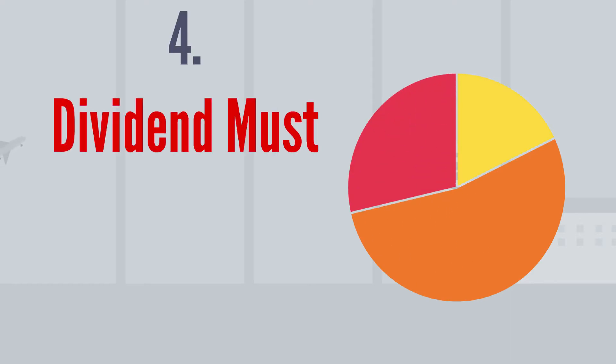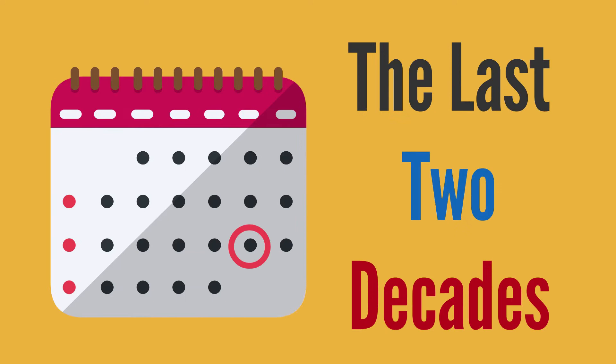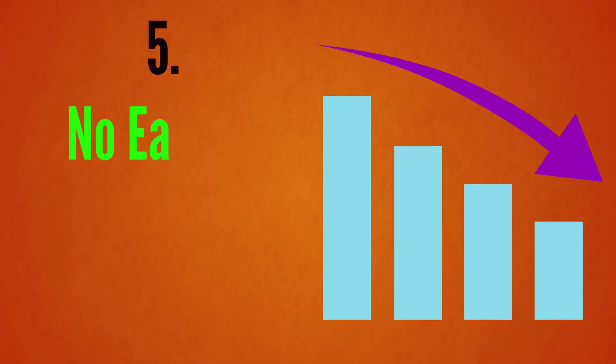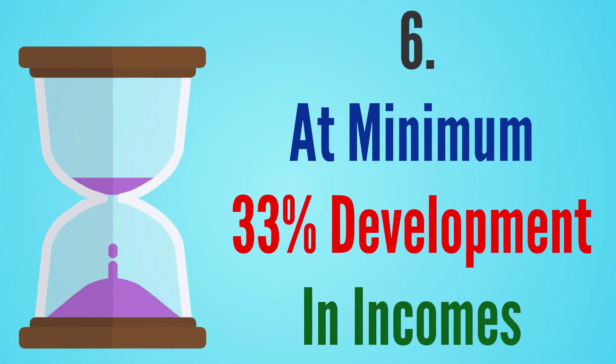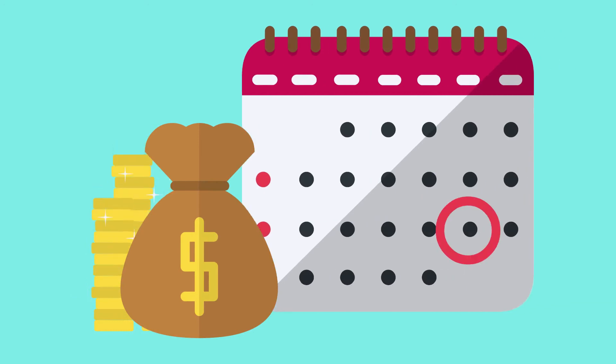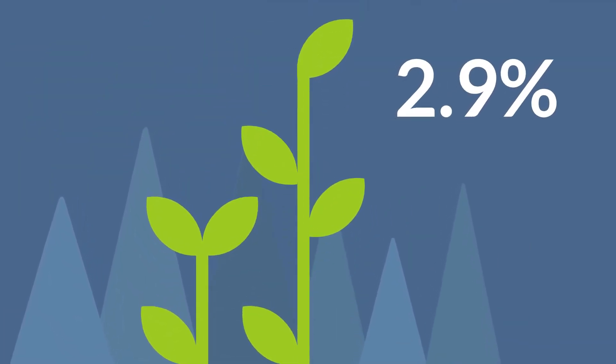4. Dividend must have been paid to shareholders for at minimum the last two decades. 5. No earning deficits in the last 10 years. 6. At minimum 33% development in earnings throughout the last 10 years, which translates to a conservative growth of 2.9% annually.